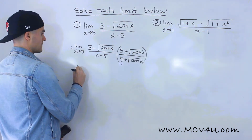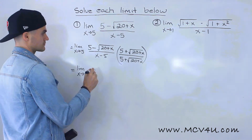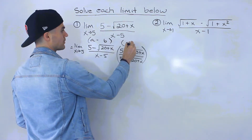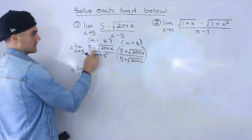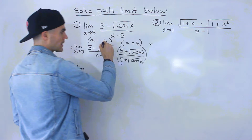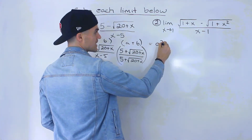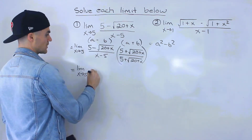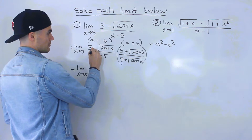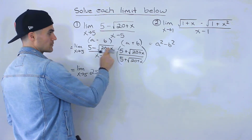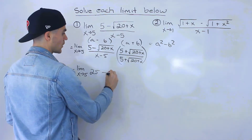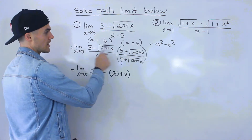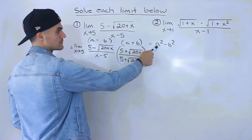When we do that, this is like (a minus b)(a plus b), which is a difference of squares — that gives us a squared minus b squared. Applying that: 5 times 5 gives us 25, then negative times positive gives us negative, and root(20 plus x) times root(20 plus x) gives us 20 plus x — the square root goes away. So we square the left side and square the right side.